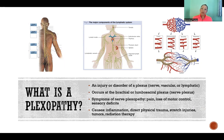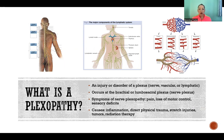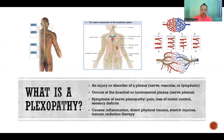So a plexopathy could be a disorder or damage to a vascular network or a lymphatic network — like a network of those vessels that come together, as seen in the pictures above. But normally when we talk about plexopathy or a plexus, we're usually referring to nerve plexuses. When it comes to nerve plexopathy, it usually occurs at the brachial or lumbosacral nerve plexuses.